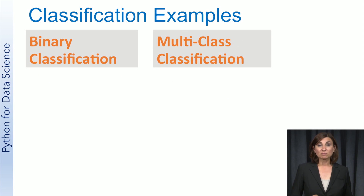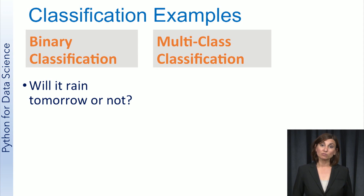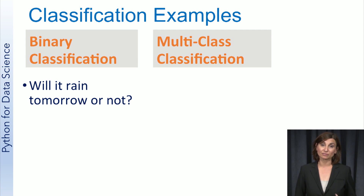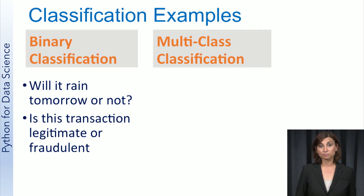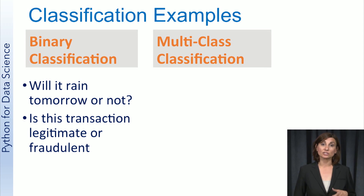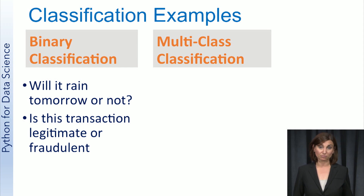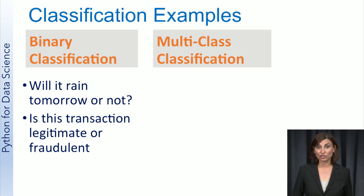Some examples of binary classification are predicting whether it will rain tomorrow or not — there are only two possible outcomes: yes, it will rain tomorrow, or no, it will not rain tomorrow. Another example is identifying whether a credit card transaction is legitimate or fraudulent. Again, there are only two possible values for the target: legitimate and fraudulent.